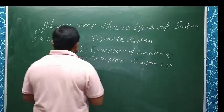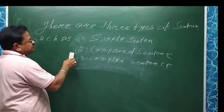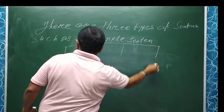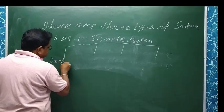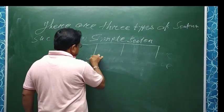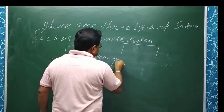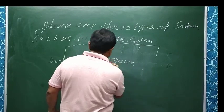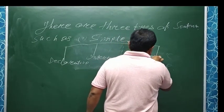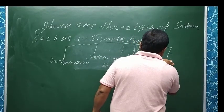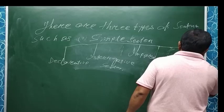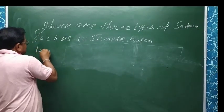Today I have discussed the simple sentence. There are four types of simple sentences: declarative sentence, interrogative sentence, imperative sentence, and exclamatory. Let's take examples.